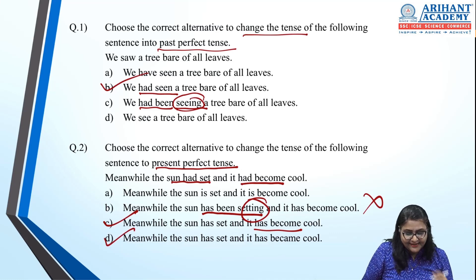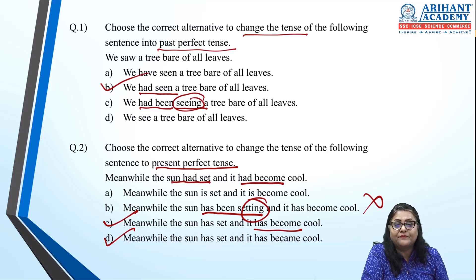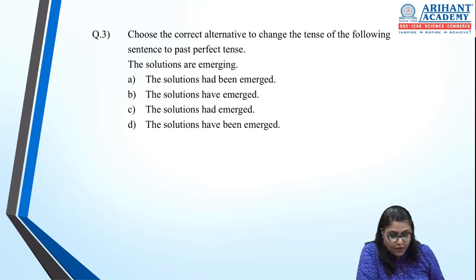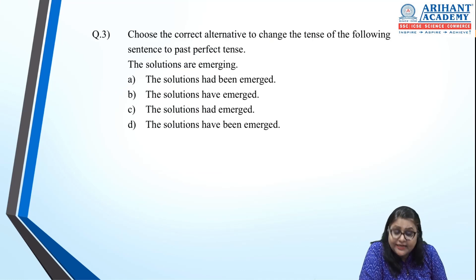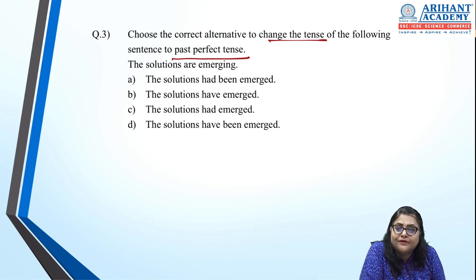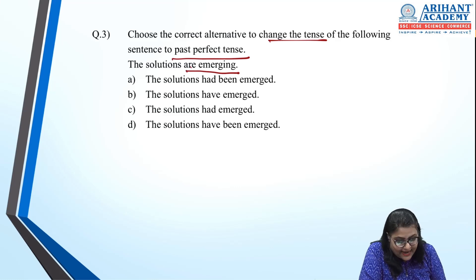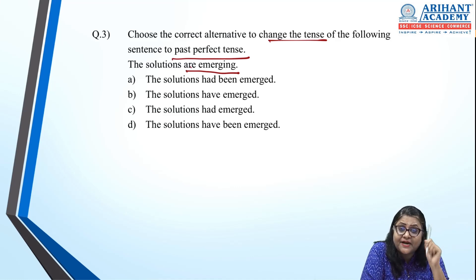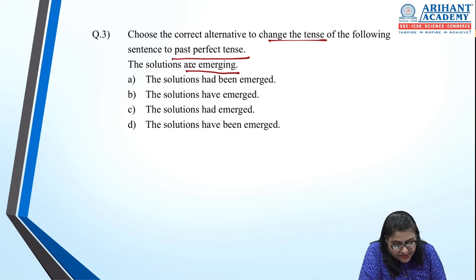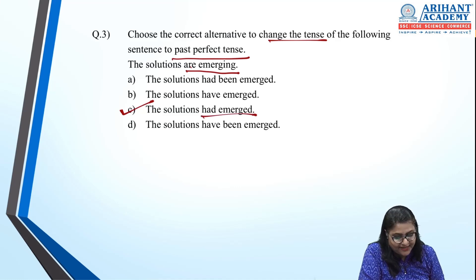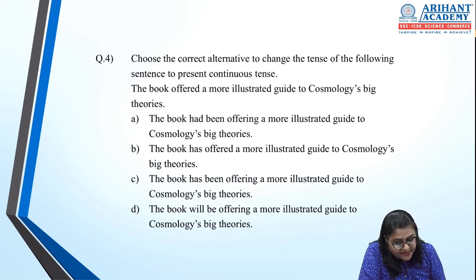Next: change to past perfect — 'solutions are emerging' is present continuous. Past perfect means 'had' plus past participle, so 'solutions had emerged' is correct.